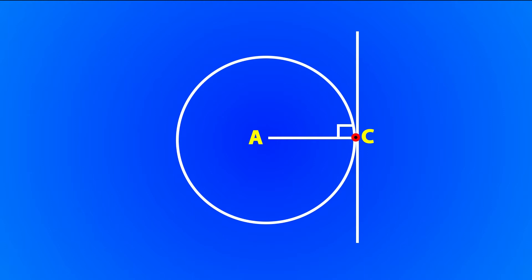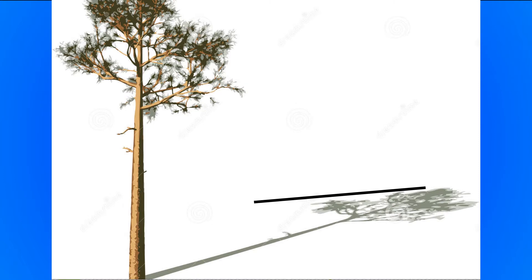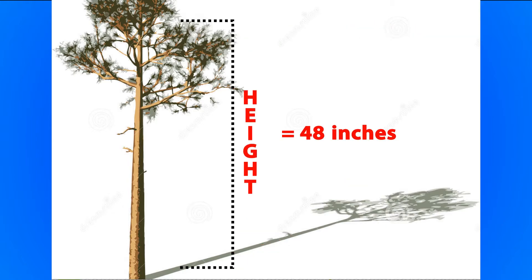Tangent can be used to solve any problem, like how to calculate height of a tree. As you can see in this diagram, the length of the shadow is 14 inches and the angle is 16 degrees. So all we have to do is take the degree and divide by inches. So now we have 14 divided by tan 16 degrees, that is 48. So height of this tree is 48 inches.